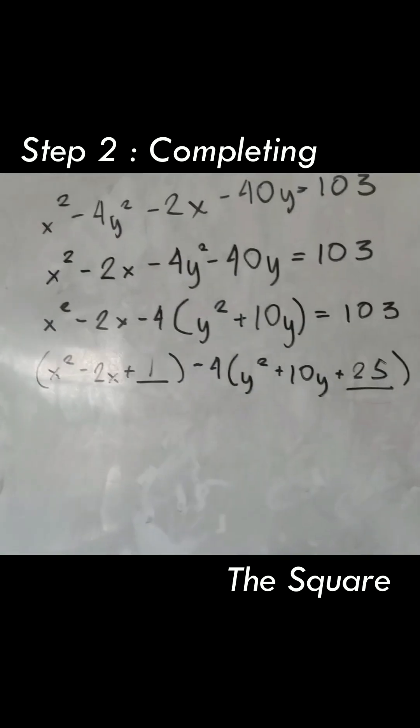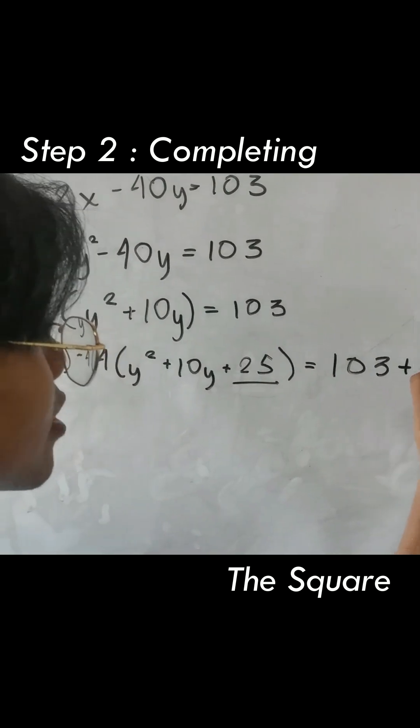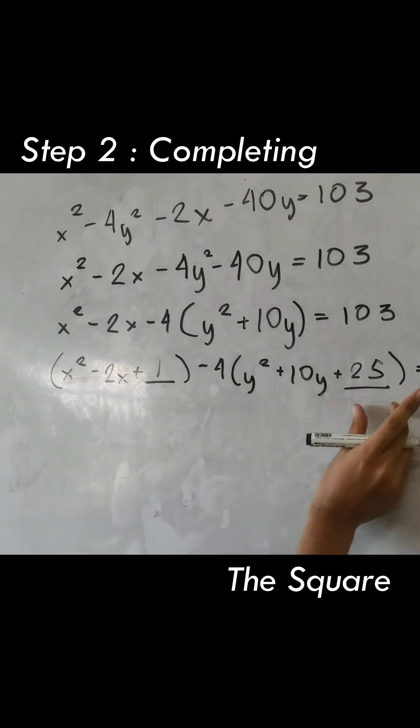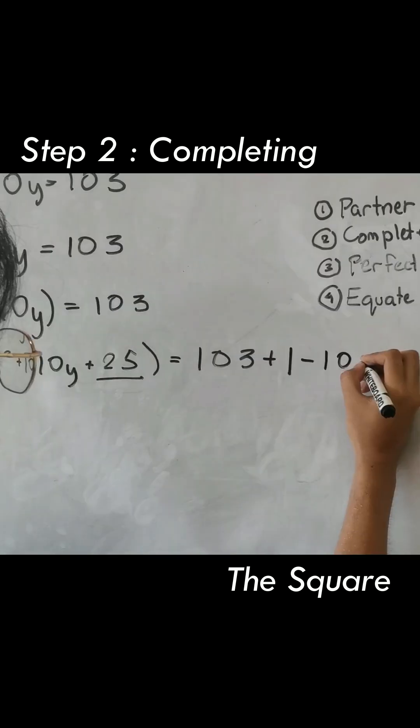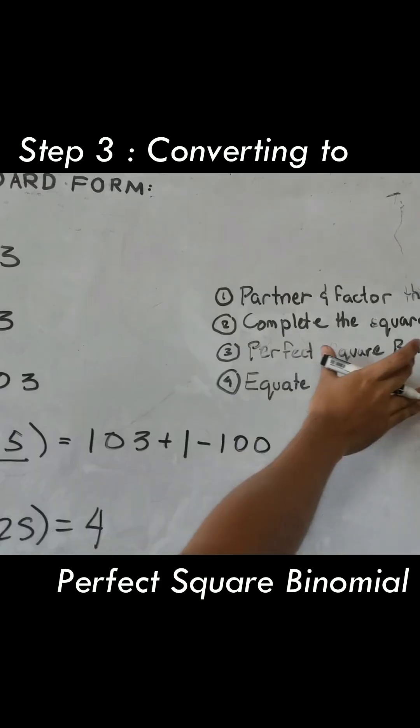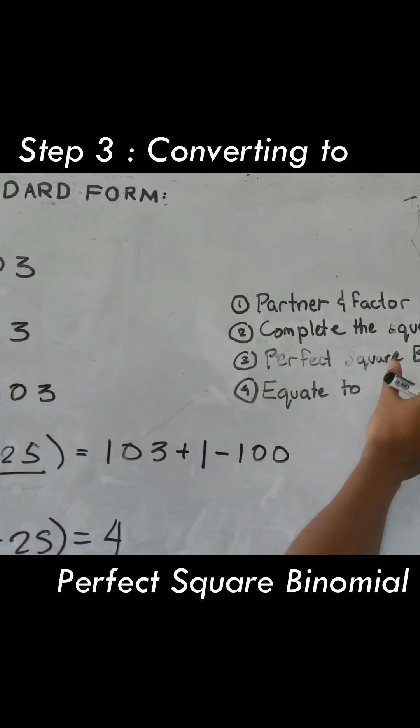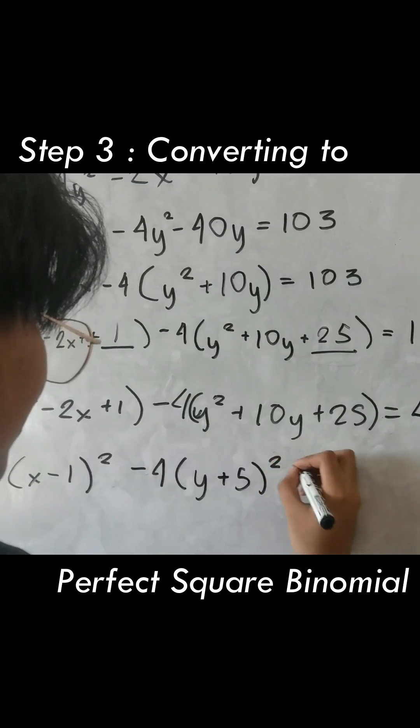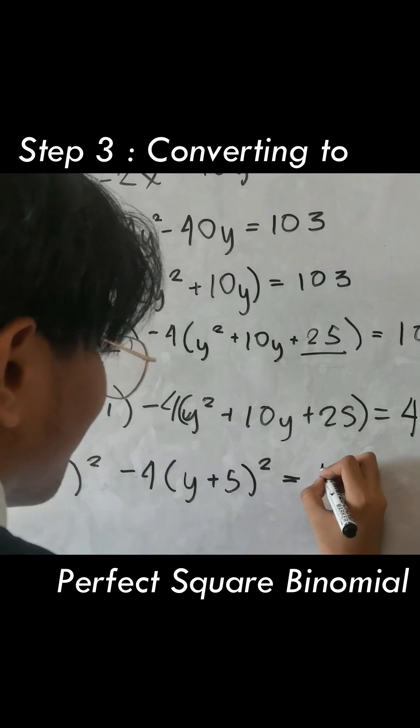And we need to add on the other side. We're going to add the 1. We need to multiply them both — we get 100. The perfect square binomial, squared, is equal to 4.